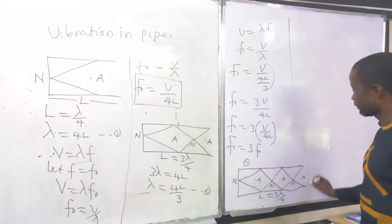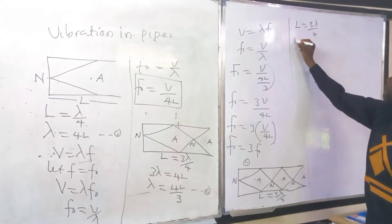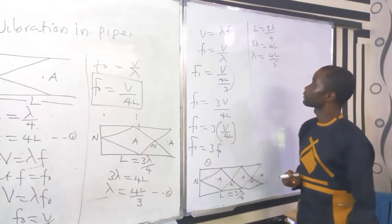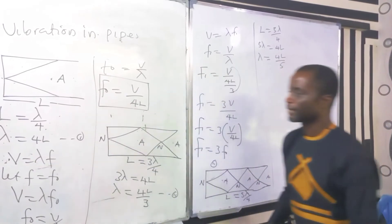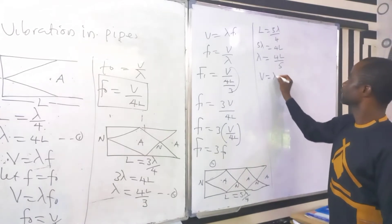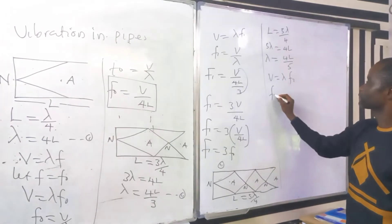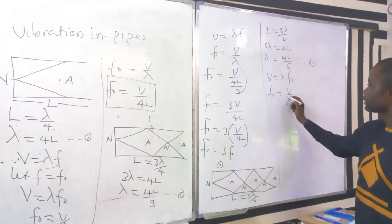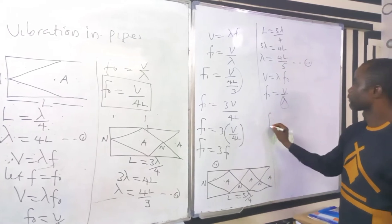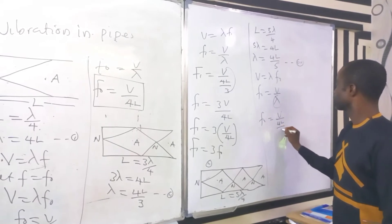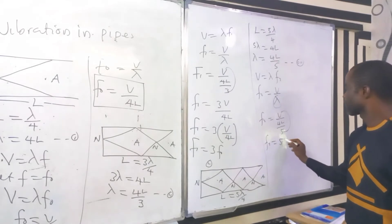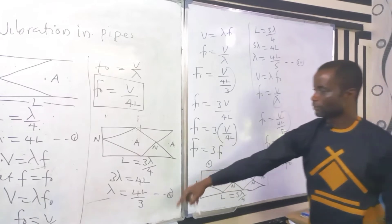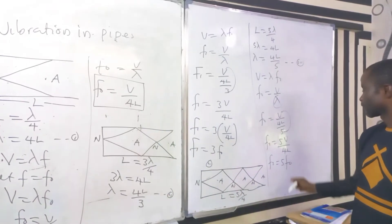Therefore, 5 lambda equals 4L, so lambda equals 4L over 5. Recalling V equals lambda times F2, where F2 is the second overtone, F2 equals V over lambda. Substituting lambda equals 4L over 5: F2 equals V over (4L over 5), which simplifies to F2 equals 5V over 4L. Therefore, F2 equals 5 f-naught, since V over 4L is the fundamental frequency.